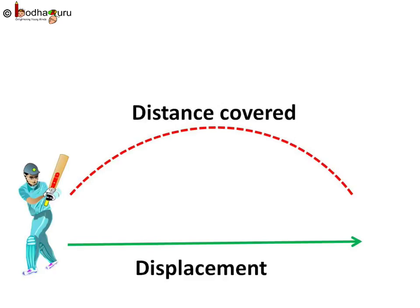Distance is the length of the path travelled by the object — in this case, the measure of the curve. Whereas displacement is the measure of the shortest path between the bat and where the ball lands. That is, the measure of the green straight line between the batsman and where the ball lands.